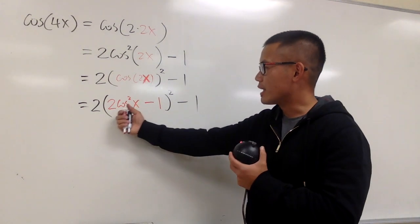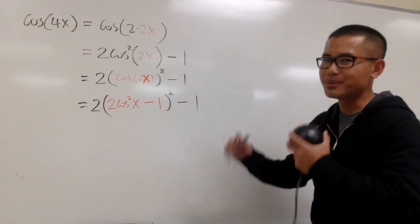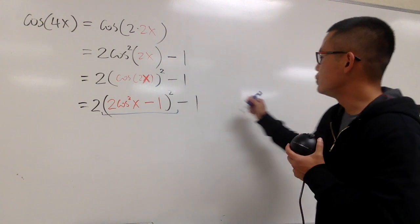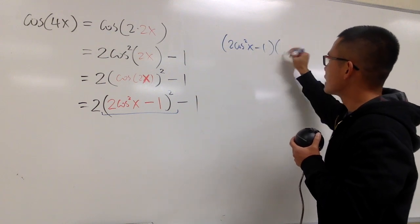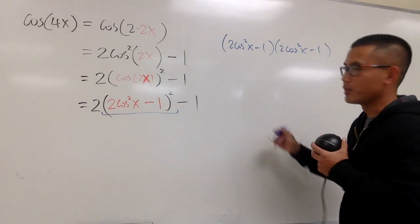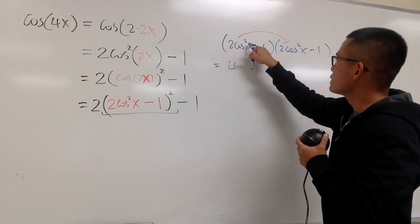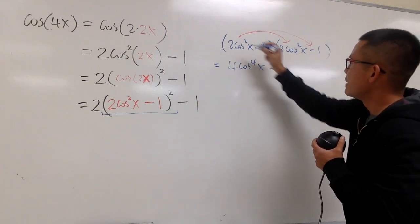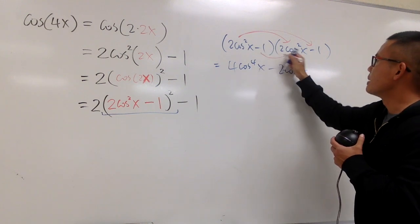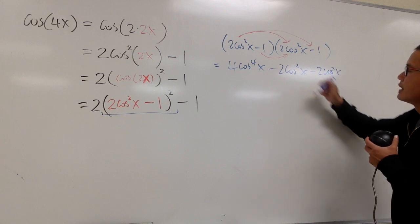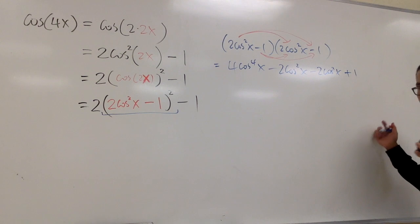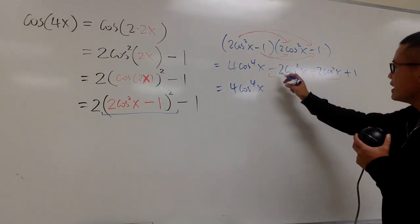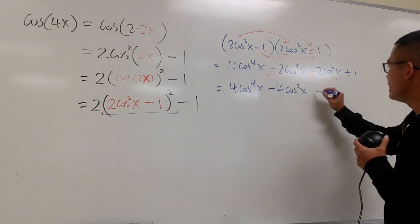We should technically multiply things out and combine them, and do as much work as possible. So I have to take this and square it — I'll do that on the side. This part is the same as (2cos²x − 1)(2cos²x − 1), and we'll do FOIL. First: 2 times 2 is 4, cosine squared x times cosine squared x is cosine to the fourth power x. Then: minus 2 cosine squared x. Then: minus 2 cosine squared x. And at the end: minus 1 times minus 1 is plus 1. Combining like terms: 4 cosine to the fourth power x, minus 4 cosine squared x, plus 1.